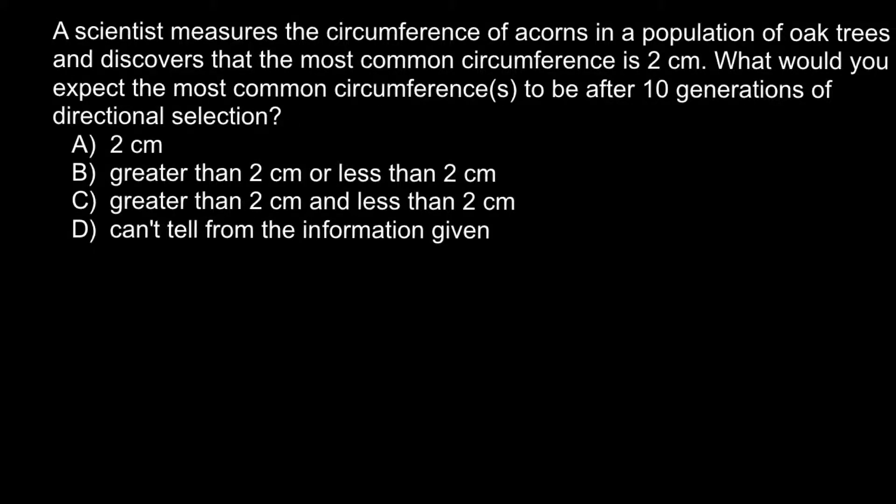In this video I want to talk about what directional selection is. Here is a problem: a scientist measures the circumference of acorns in a population of oak trees and discovers that the most common circumference is two centimeters.